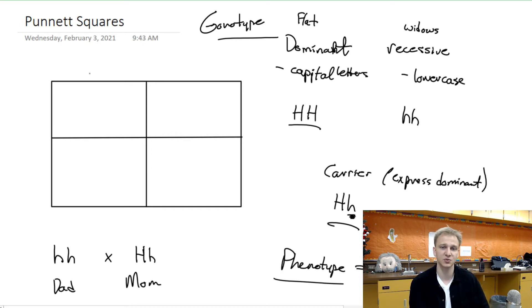And so what we do is we'll put the dad's two letters up along the top. So my dad's letters will go h and h like this. Okay, and then my mom, what we'll do is we'll put her here over on the left.